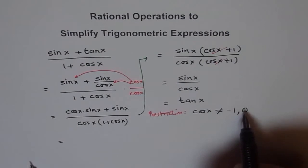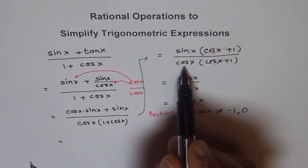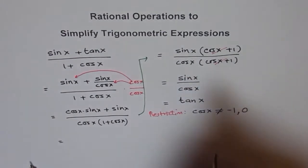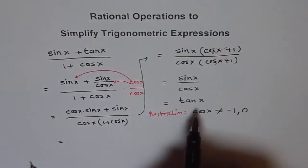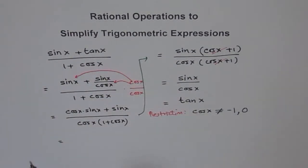We get that restriction from here itself. But in any case, whenever there is a tan function, cos x cannot be zero. That is always a restriction, even if it's not a rational expression looking like this, because tan x in itself is a rational expression, sin x over cos x.